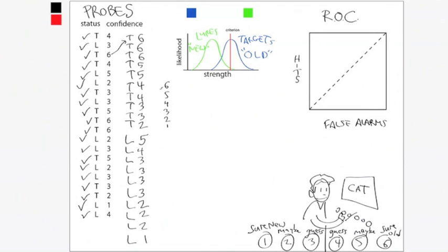We're going to say, what if they put their criterion here and they called everything that was labeled six old and everything else new? That's kind of funny because that's not what we asked the person to do. We're pretending that they did that based on the fact that they made these responses with different confidences.